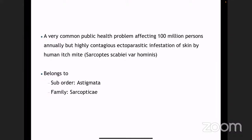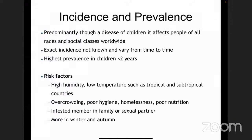The suborder is known as Astigmata and the family is Sarcoptidae. Remember the name of the species is Sarcoptes scabiei and the particular strain is hominis. Even though it is predominantly a disease of children, it can affect people of all age groups, all races, and all social classes. But the highest incidence and prevalence is seen in very young children less than two years of age.